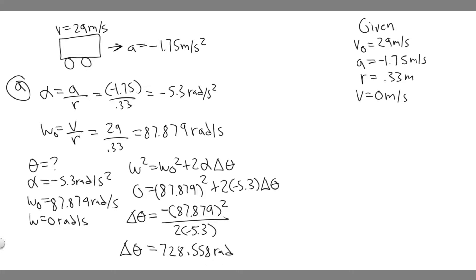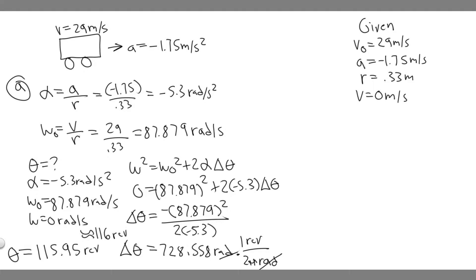We have 728.558 radians, but we want the answer in revolutions. There are 2π radians per revolution, so we divide by 2π. Doing that gives us 115.95, which we can round to about 116 revolutions. So 116 revolutions is the change in theta — essentially how many times the tire turns before it comes to a stop. That's the answer to Part A.